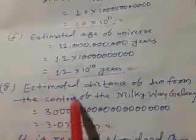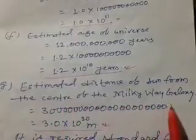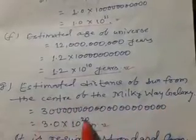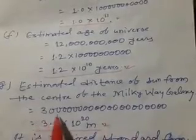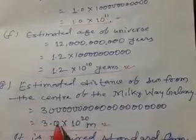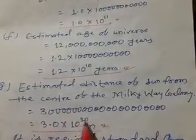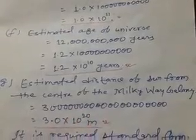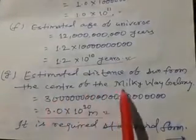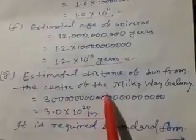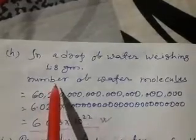Next question is estimated distance of sun from the center of the Milky Way galaxy is 3 and 20 zeros on it. So we simply write 3 into 10 to the power 20 meters. It is required standard form of the estimated distance of sun from the center of Milky Way galaxy.